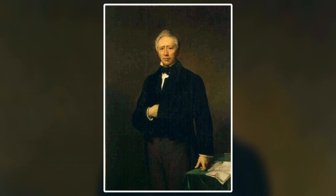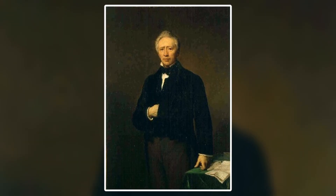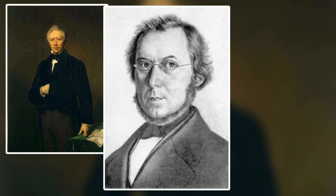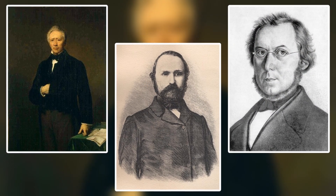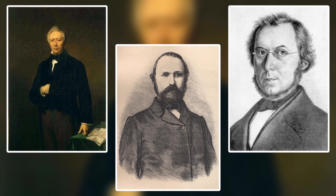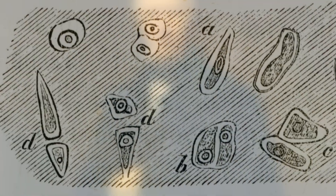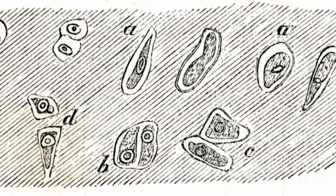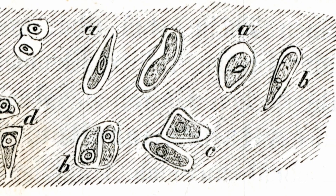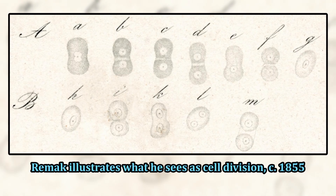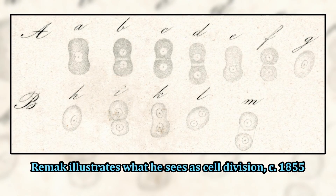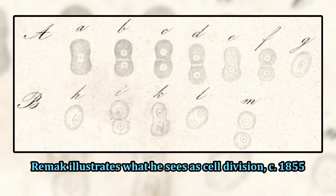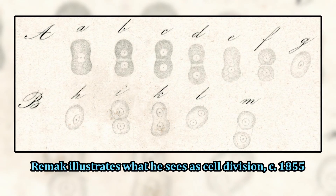That all changed by 1870, as a few bold scientists — namely Barthélemy du Mortier, Hugo von Mohl, and Robert Riemach — all shared their ideas and evidence that cells actually divide and multiply, rather than manifest through some sort of spontaneous crystallization. The process they had discovered was binary fission, a simple form of cell division that happens mainly in prokaryotes, or cells without nuclei, such as bacteria.